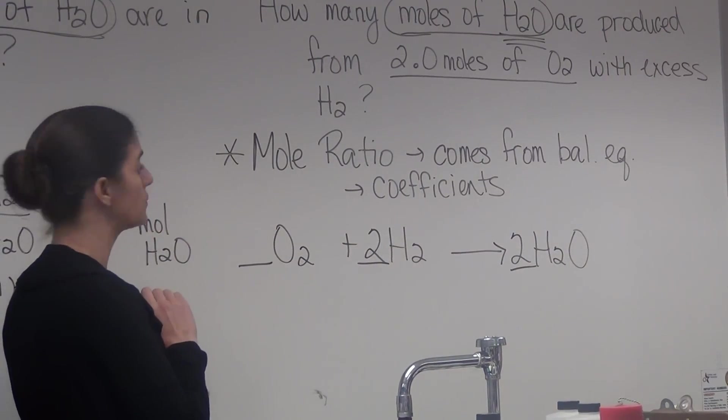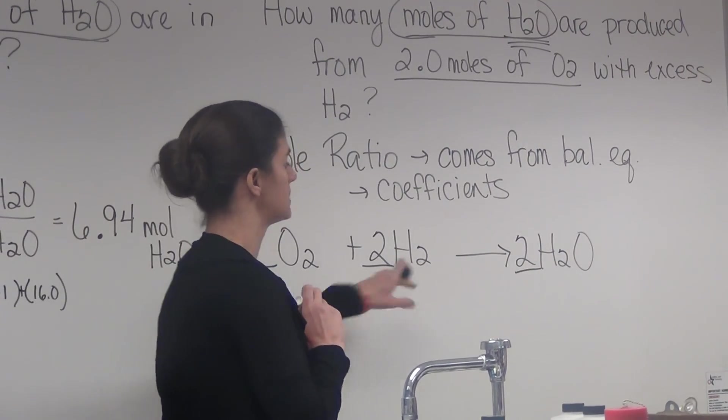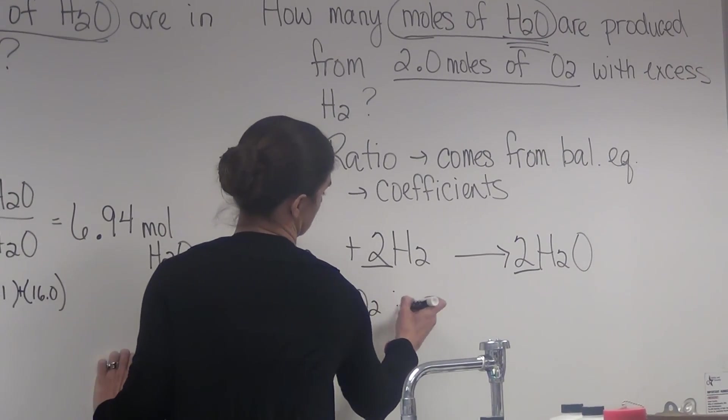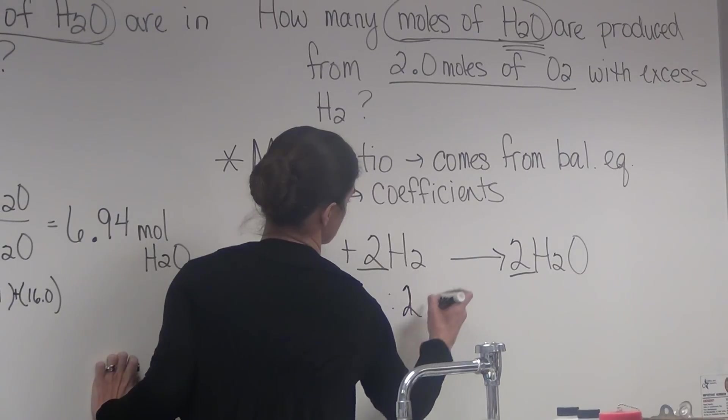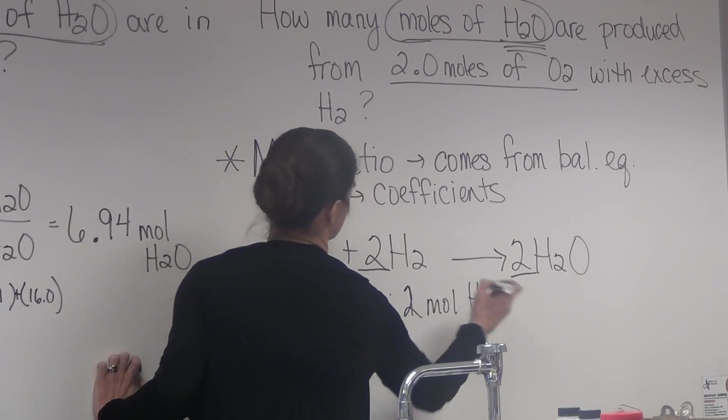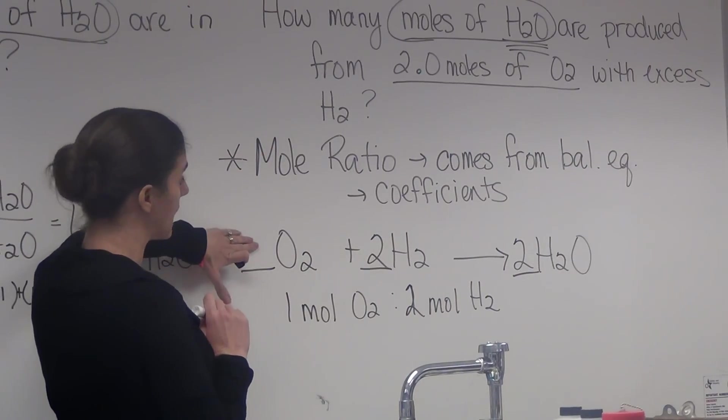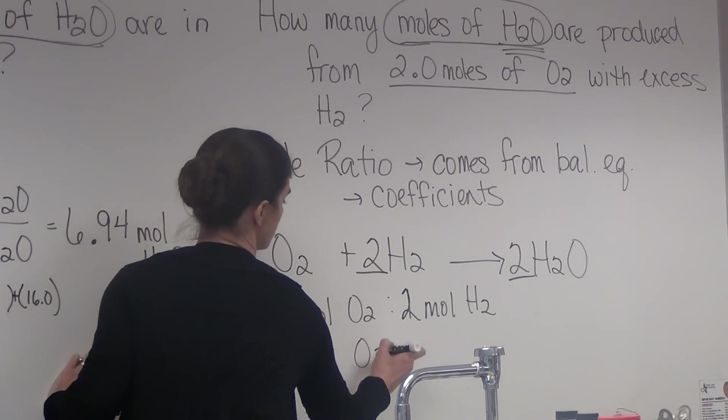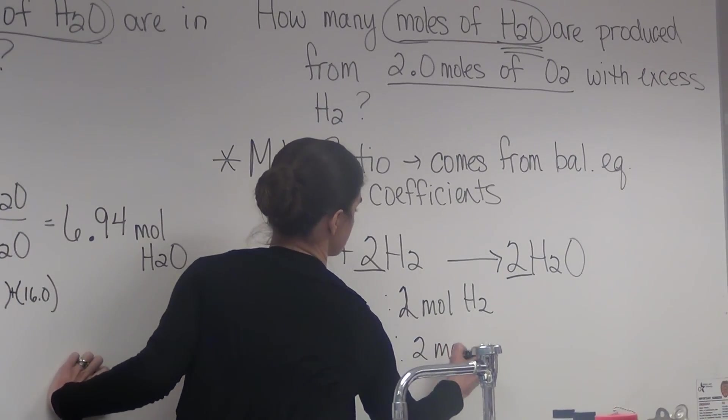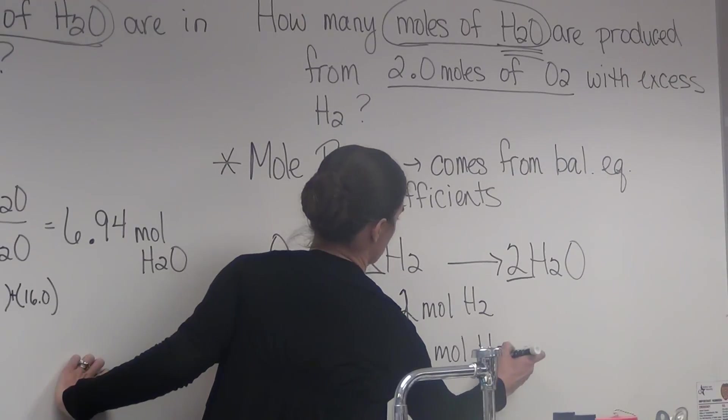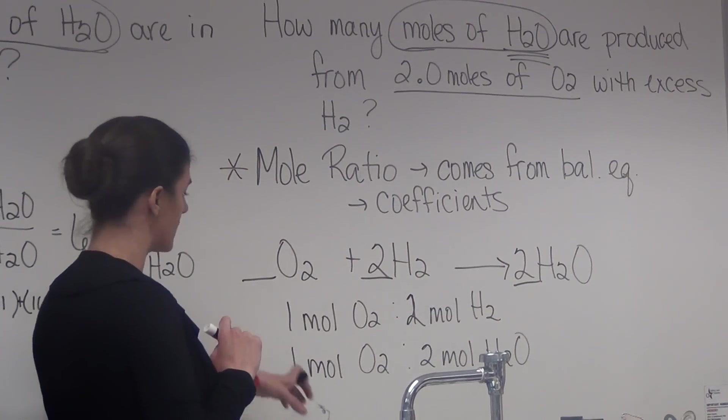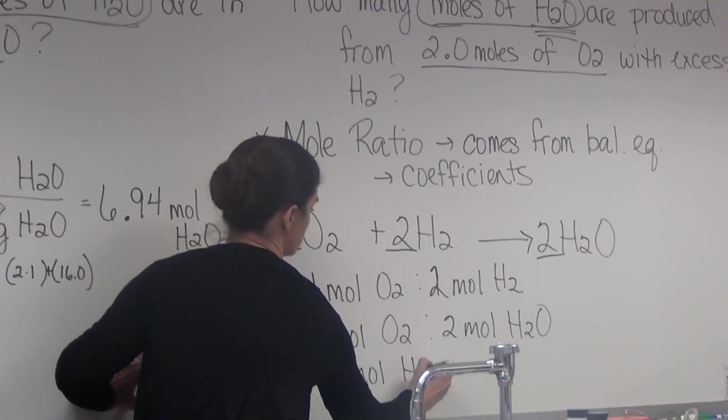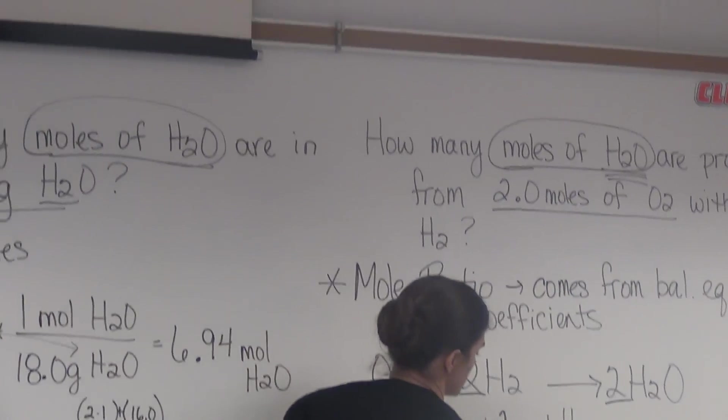So if we wanted to have the relationship from oxygen to hydrogen, it would be 1 mole oxygen to 2 moles hydrogen. Or in this problem, we're looking at oxygen to water. So we would say 1 mole oxygen to 2 moles of H2O. The only other mole ratio that we could use would be 2 moles H2 to 2 moles of water.